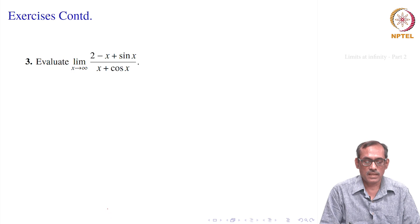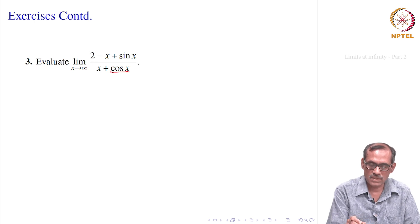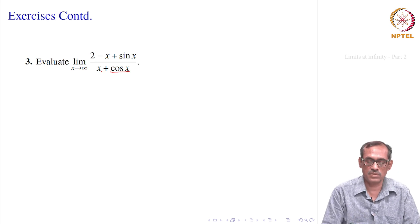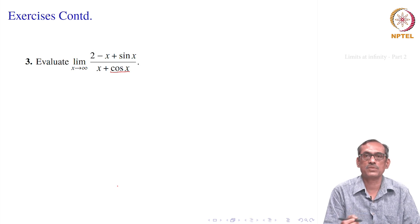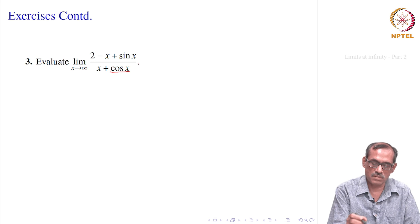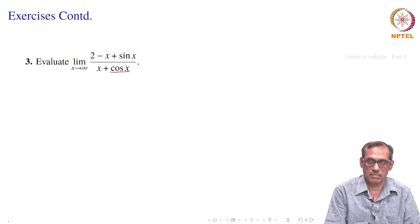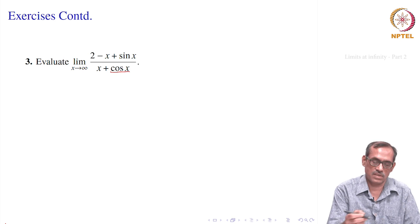Let us take another problem: evaluate the limit as x goes to infinity of (2 minus x plus sin x) divided by (x plus cos x). cos(x) can vary between minus 1 and 1, but x can be very large, so x plus cos(x) varies between x minus 1 and x plus 1 — also large. On top, minus x will dominate sin(x), so it behaves like minus x. So it looks like minus infinity on top and infinity on the bottom, which may give minus 1.